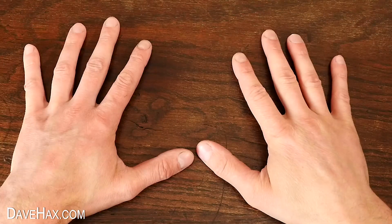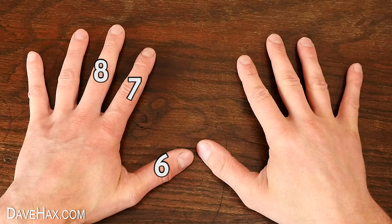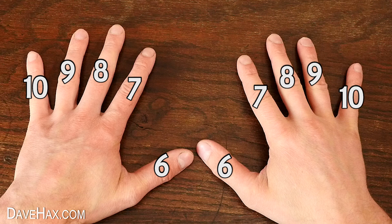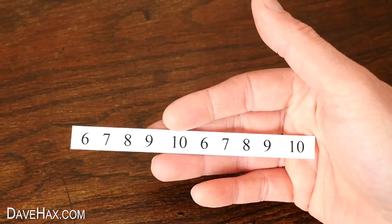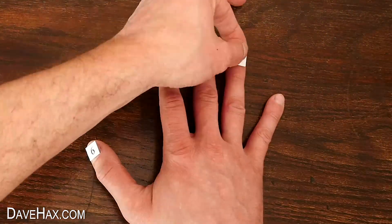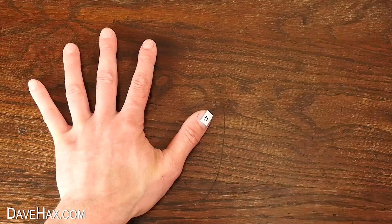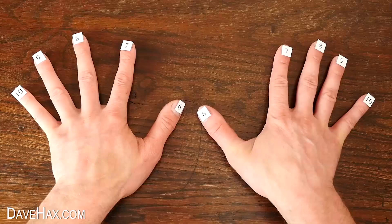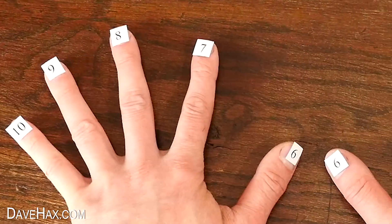We need to label each finger on our hands like this, starting from the thumb and working out. For the video I've printed off numbers, and I'm sticking them to my fingers with some Blu-Tac. You could write the numbers on some tape and stick them to your fingers, but after a bit of practice, you'll find you don't even need to label them.